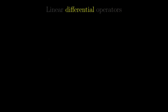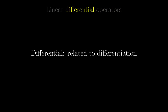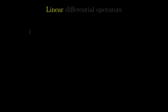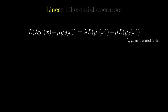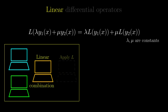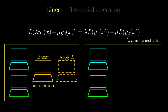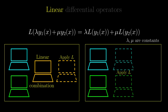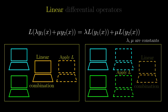Differential doesn't have too much meaning — it simply refers to relating to differentiation. But here comes linear. Algebraically, this is the definition of linearity in this context. Essentially, the left-hand side says that we first consider a linear combination of two functions, and then apply the operator L. The right-hand side does things in the reverse order, by applying the operator to both functions first, then considering the linear combination. The operator being linear simply means that the order of these two steps doesn't matter.